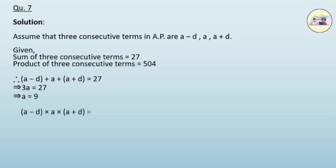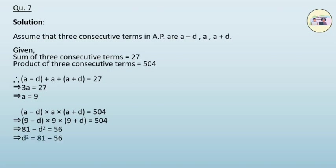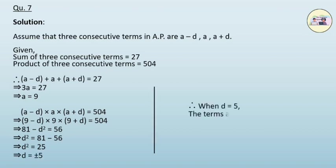Also, we are given (a−d) × a × (a+d) = 504. Substituting the value of a: (9−d) × 9 × (9+d) = 504. After solving, we get 81 − d² = 56, therefore d² = 81 − 56 = 25, giving d = ±5. When d = 5, the terms are 4, 9, and 14.